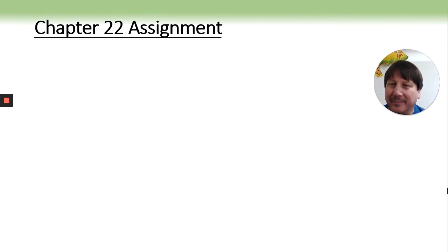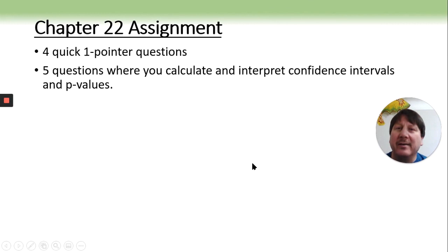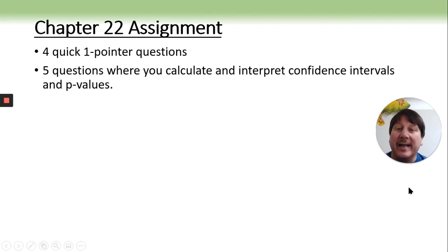Your assignment on this chapter. The first four questions are quick little one-pointers, just those that are called reading questions, just to keep you on your toes. You don't get a second chance on those, but they're not supposed to be difficult. And then there are five questions where you have to calculate out either a confidence interval or a p-value. The emphasis is not on calculating. It is on your interpretations. A lot of the questions have little things that you have to interpret and read them carefully. This might be a little bit longer assignment than some of the others, but I do promise that the next two will be shorter.